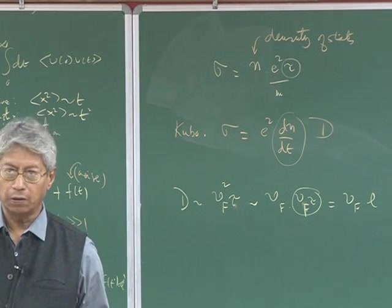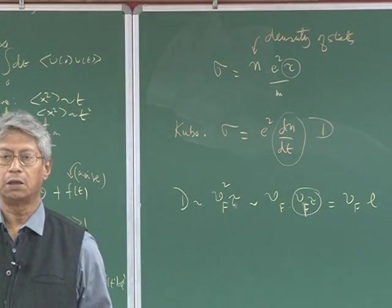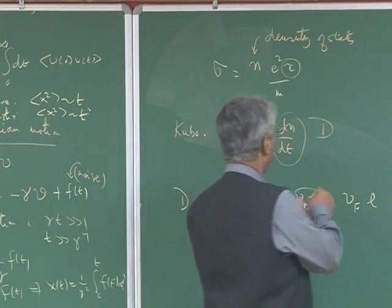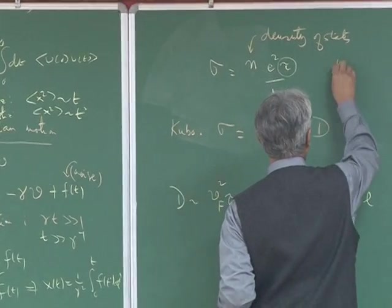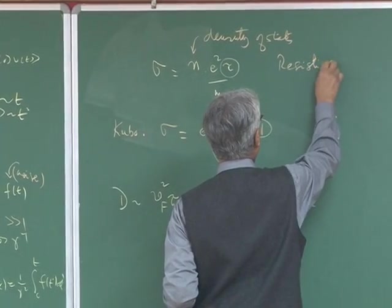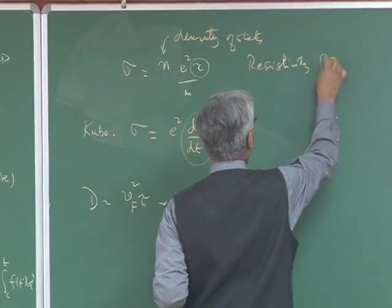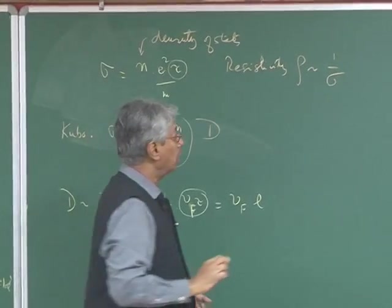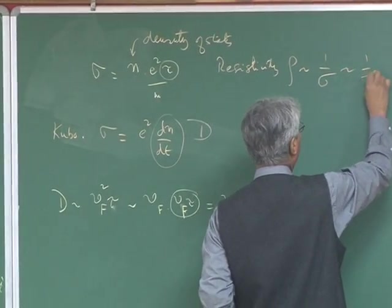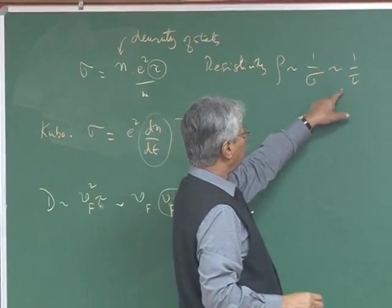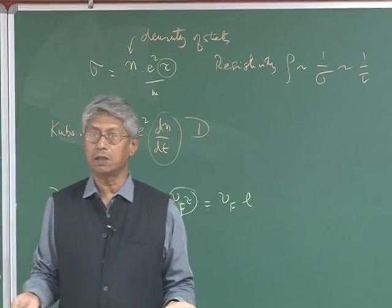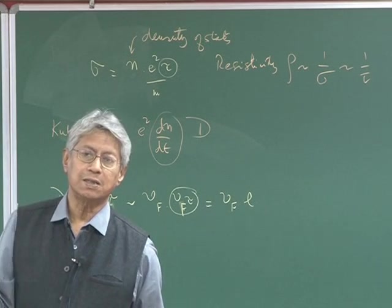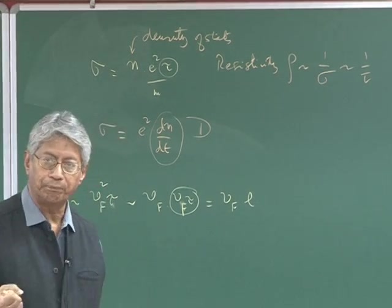If tau decreases, then resistivity rho is actually inversely proportional to conductivity. Resistivity is therefore proportional to 1 over tau. If tau decreases, my resistivity increases, which is intuitively what we all know: if temperature increases, then resistivity increases. So this part is fully understood—rho of T, if you plot versus T, resistivity increases.